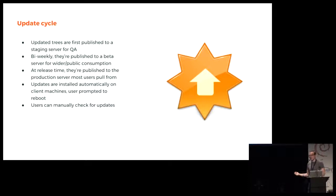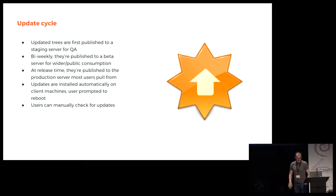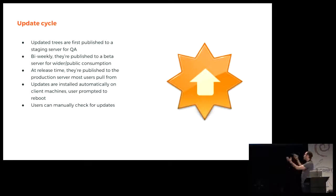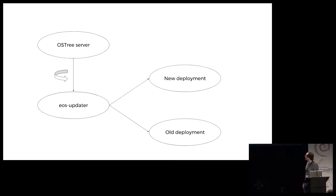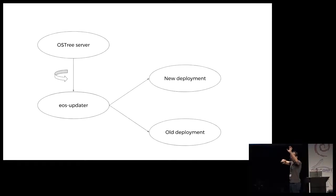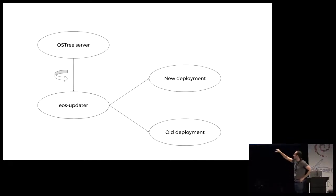Updates are installed automatically on client machines. We feel so confident that this won't break that we just install it on users' machines, provided they are not connected with expensive mobile internet — because that would cost their data. But if you're connected to Wi-Fi or Ethernet, we just download it and install it, and then we ask you to reboot whenever you like to get into the new version. You're either in the new deployment if everything goes well, or staying in the old. There's never an in-between broken situation. It actually never happened so far — touching wood — that this didn't work. It's very reliable.